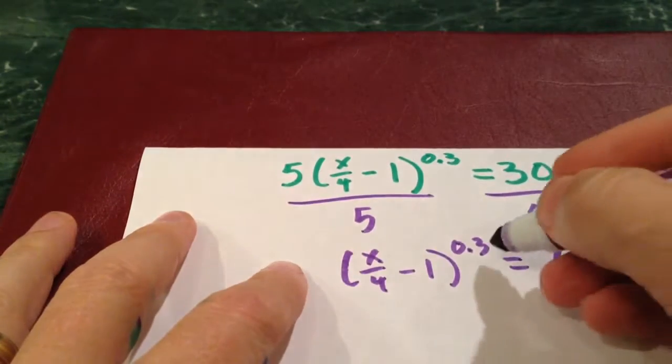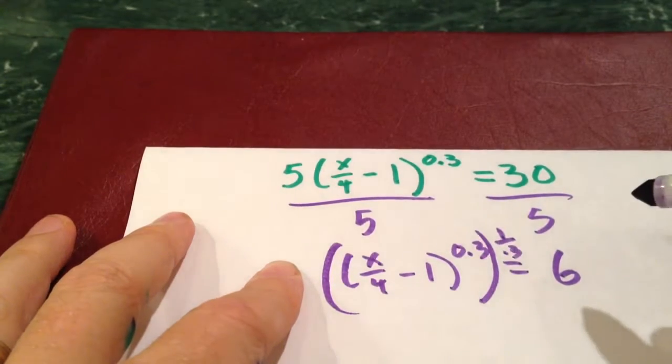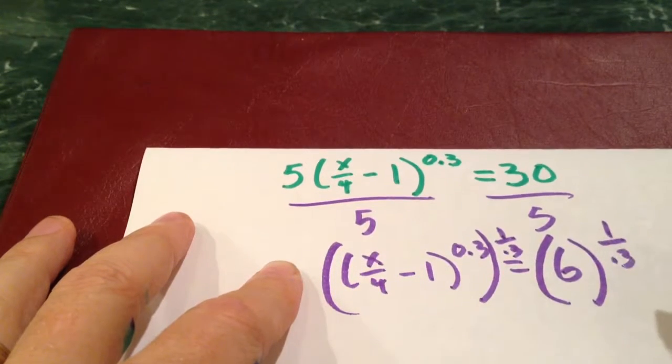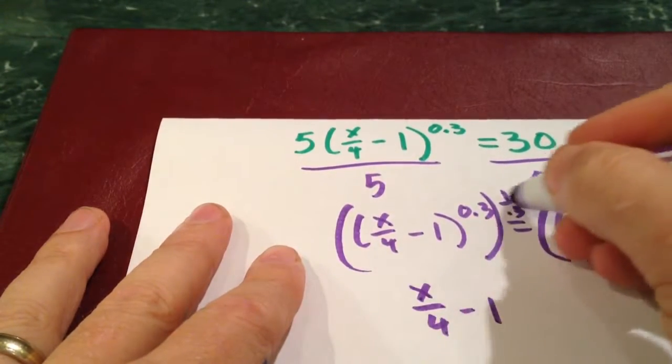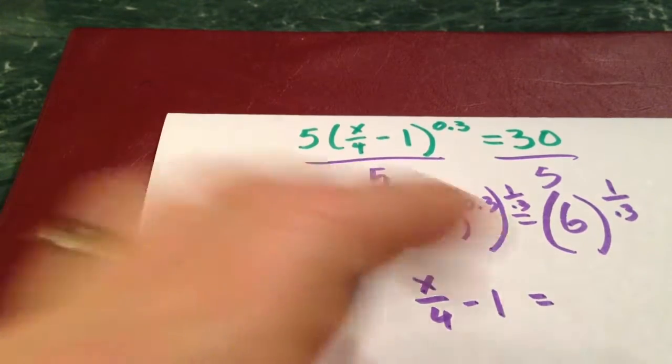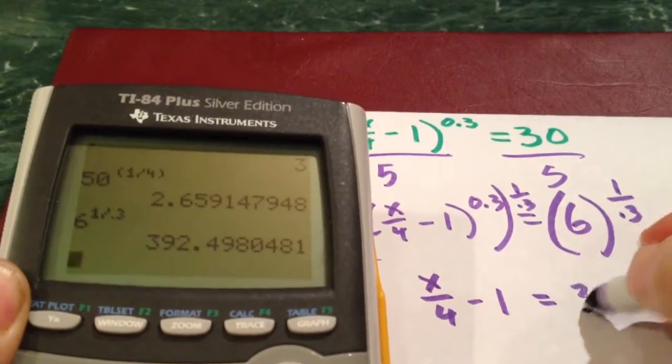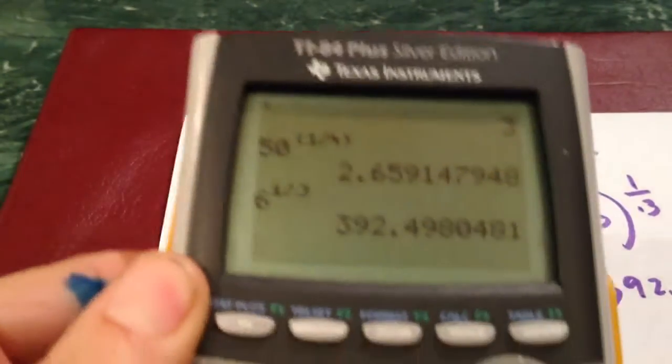I'm going to get x over 4 minus 1 to the 0.3 equals 6. Then I'm going to do the reciprocal. The reciprocal of 0.3 is 1 over 0.3, which is a weird way to write it, but it is a value. So I'm going to raise this side to the 1 over 0.3. I'm going to do x over 4 minus 1 because those reciprocals have to multiply to 1. Then I'm going to do this on my calculator out to the side here.